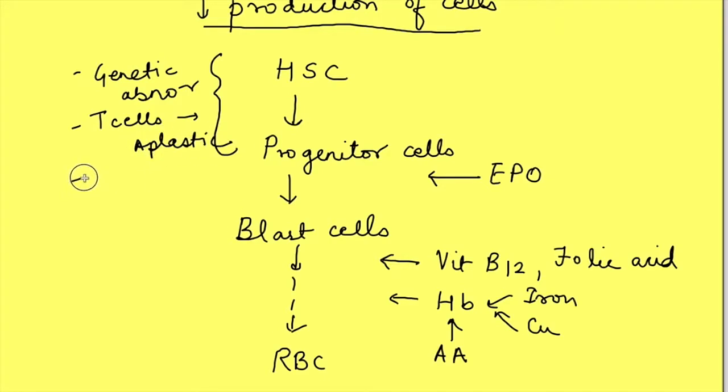It can also be caused by marrow infiltration. That means occupation of marrow spaces by some other cells or fibrosis of marrow. So that will directly affect these stages.